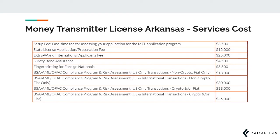In addition to the government related fees and state expenses, you will need a host or suite of services in order to complete your application. Typically, these documents are prepared once and are then submitted to each state where you would be applying for licensing. You do not have to pay these costs again and again for each state.